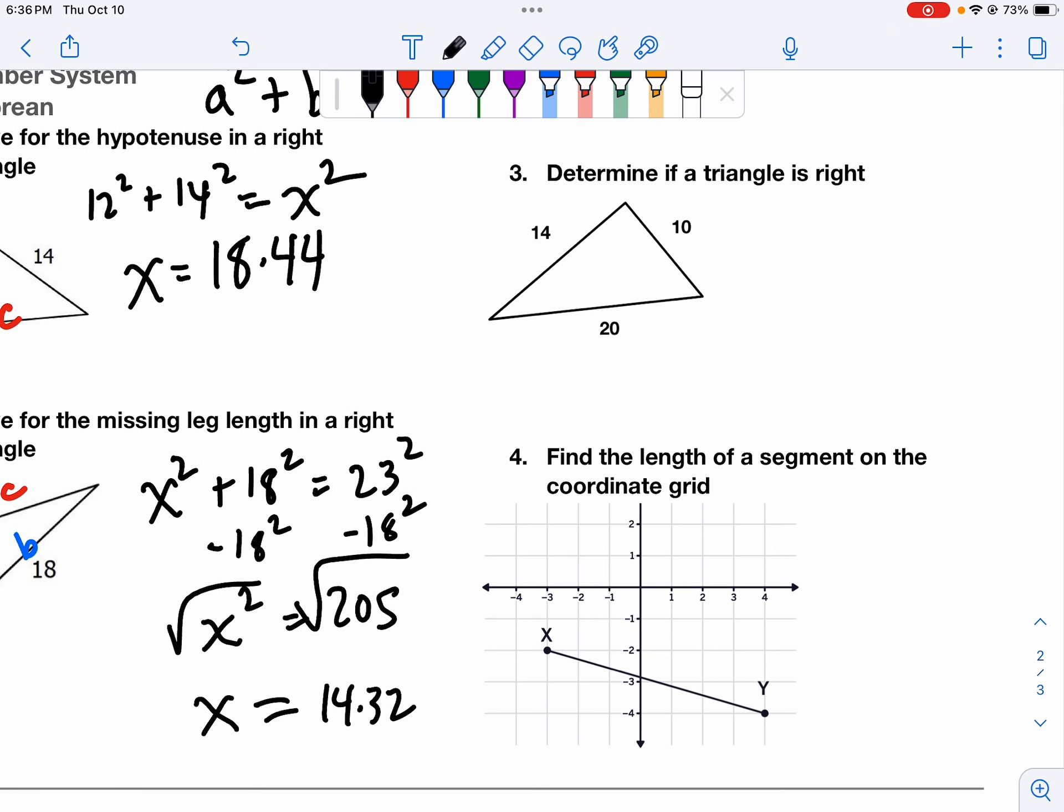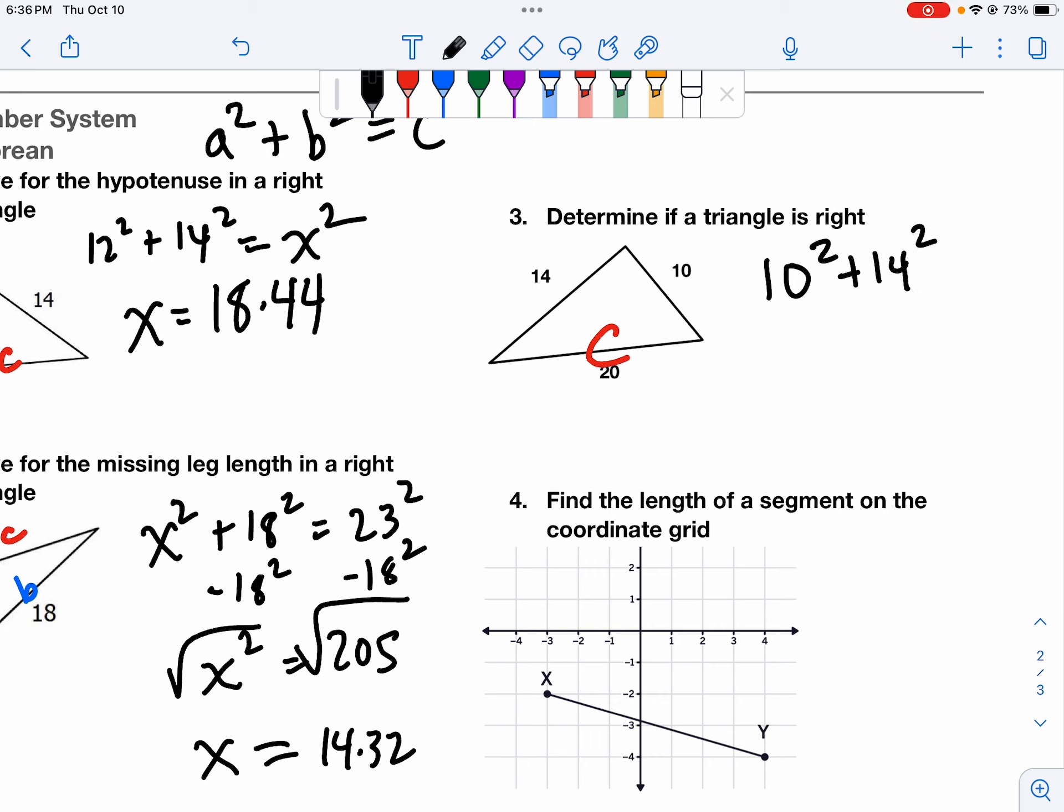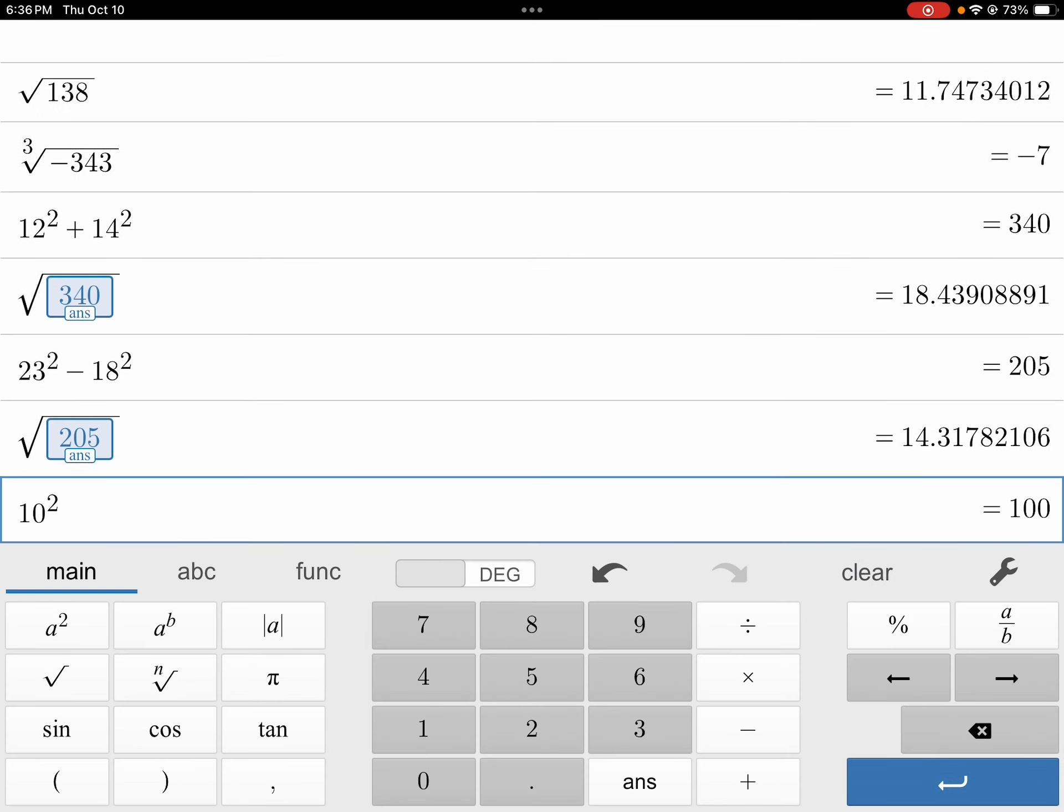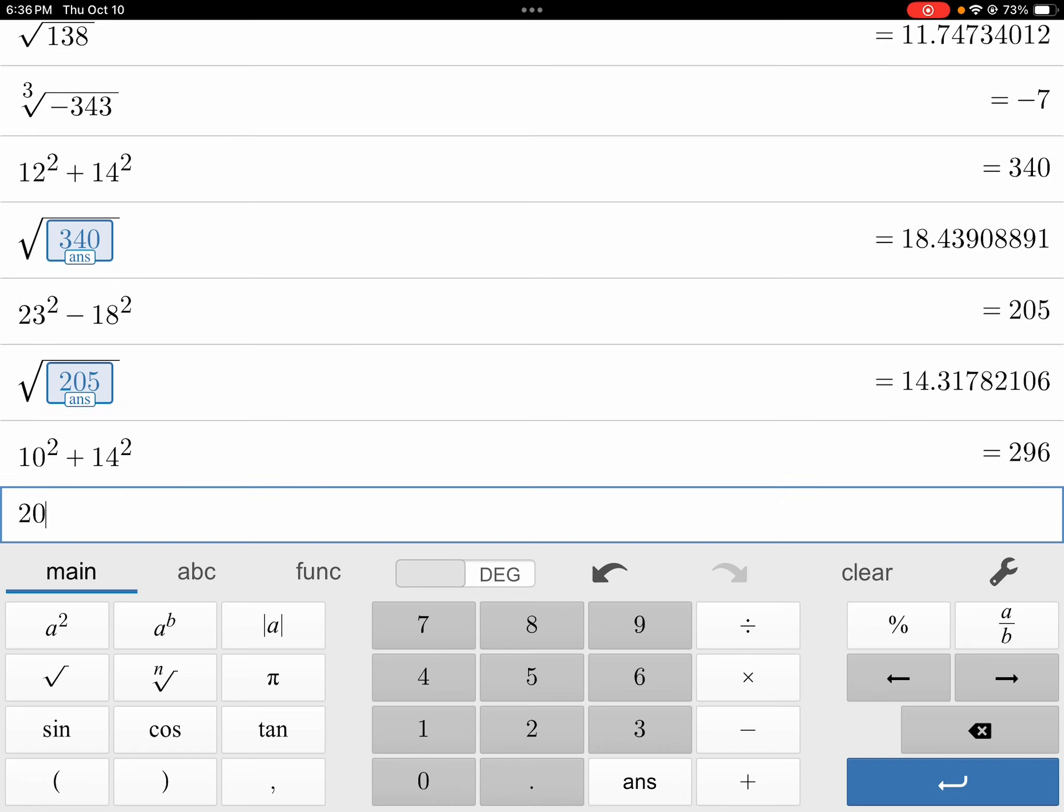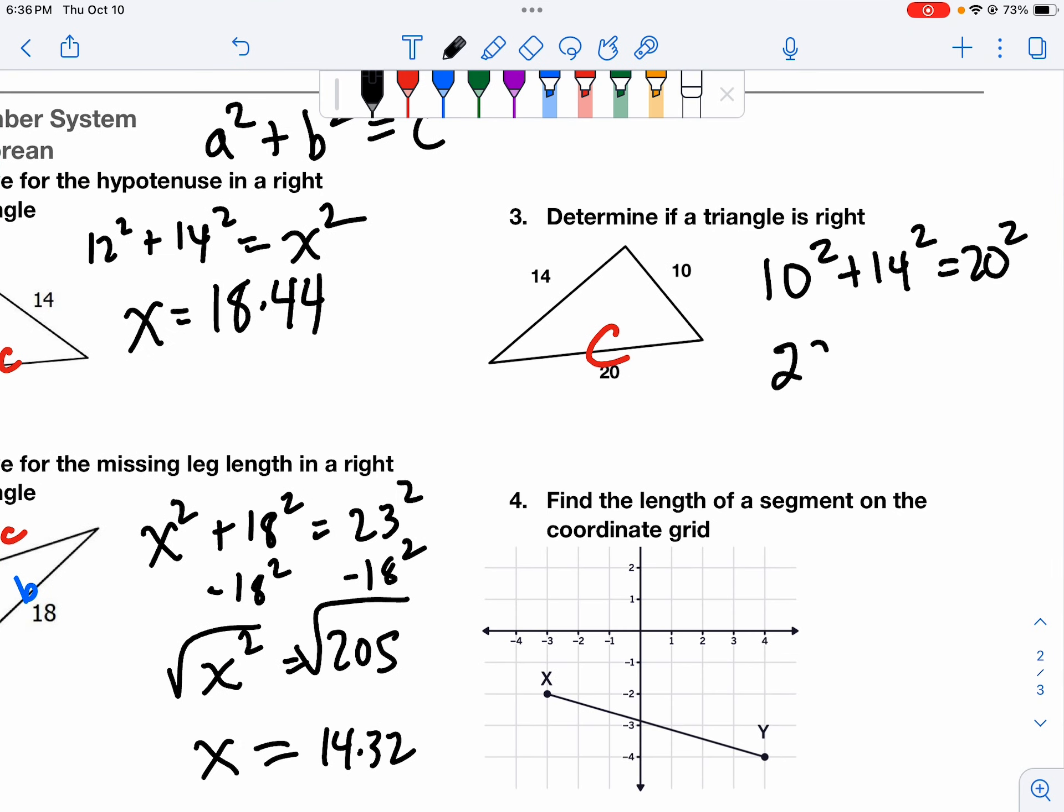Next problem for Pythagorean is determining if the triangle is right. We have to put it into the Pythagorean theorem. C is always going to be the longest side. So I'm going to go ahead and say 10 squared plus 14 squared equals 20 squared. Now, this is where we go and we check it. We're going to put the left side into the calculator, the right side into the calculator, and see what we get. 10 squared plus 14 squared equals 296. 20 squared equals 400. So 296 does not equal 400. So the answer is no, not a right triangle. This is not right because it does not fit the Pythagorean theorem.